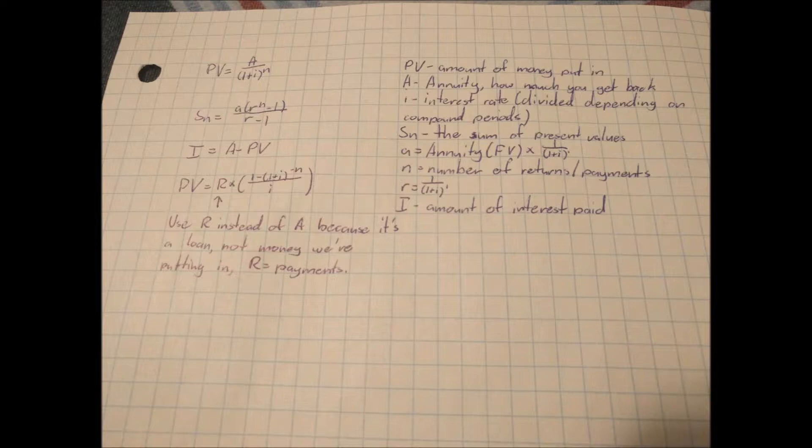The third equation is capital I equals capital A minus PV. I represents the amount of interest paid. The A in this equation is for the total of payments or rebates including the interest, and present value is the money you put in.